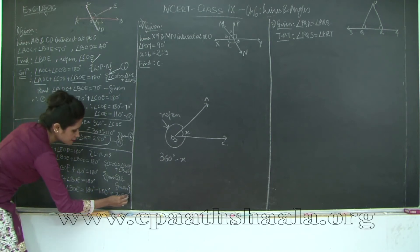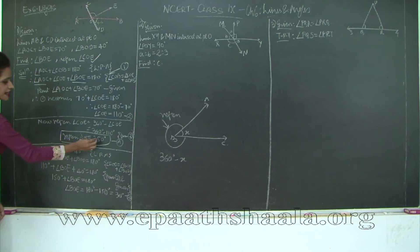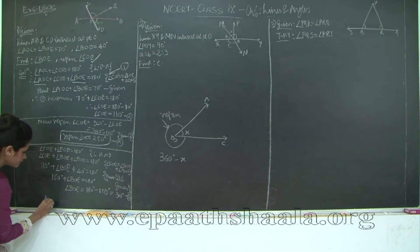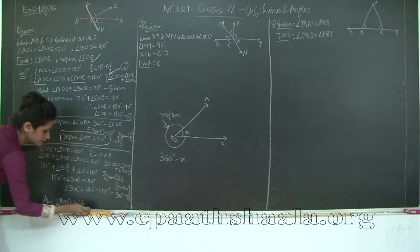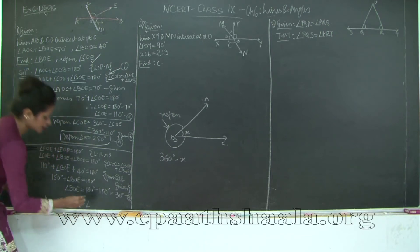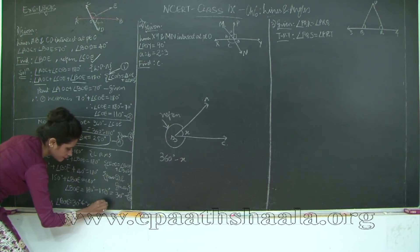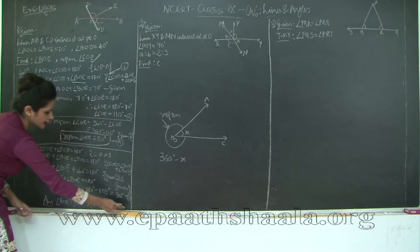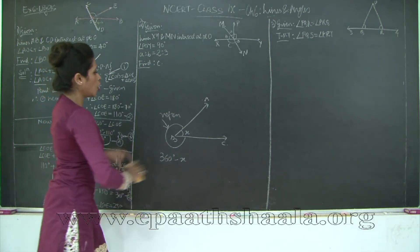I will mark this as B. Therefore, from A and B we have found our answers: reflex angle COE is 250 degrees and angle BOE is 30 degrees. Angle BOE is equal to 30 degrees and reflex angle COE is equal to 250 degrees. So this was the first question. Let us move on to the second question of exercise 6.1.